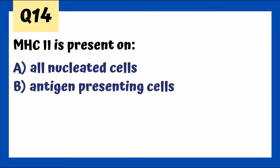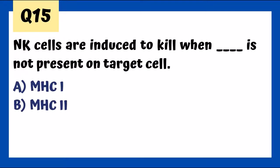MHC2 is not present on all nucleated cells — that's MHC1. MHC2 is on antigen-presenting cells. NK cells are induced to kill when MHC1 is not present — a very cool mechanism. Natural killer cells are activated in the absence of MHC class 1. You could say natural killer cells are inhibited by self-MHC class 1.